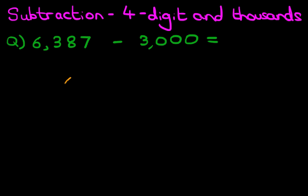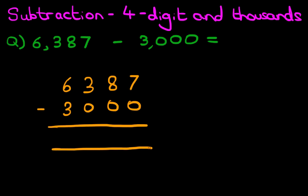We'll do that over here. 6,387 minus 3,000. Nice neat columns. Let's label the columns as well. We have the units column, tens, hundreds and thousands.